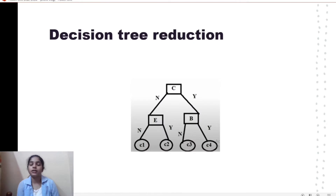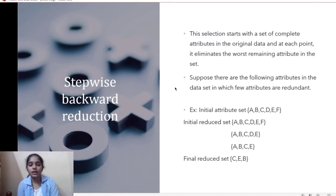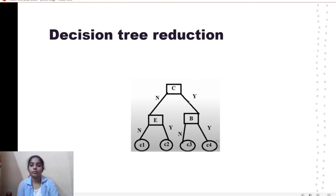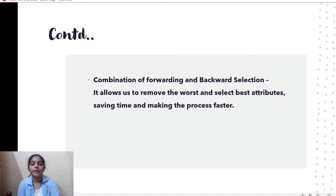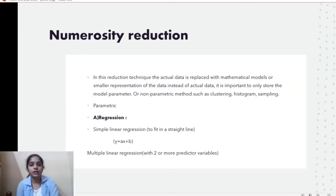In decision tree induction, c is placed as the root node since it was identified as the best element. If yes, the branch leads to b; if no, it leads to e. The labels c1, c2, c3, and c4 are the class labels obtained from the calculation. We can also use a combination of forward and backward selection to remove the worst and select the best attributes, saving time and making the process faster. This concludes dimensionality reduction.